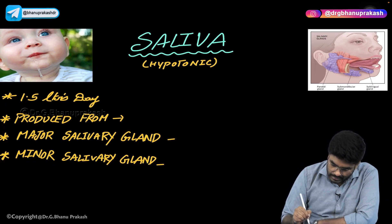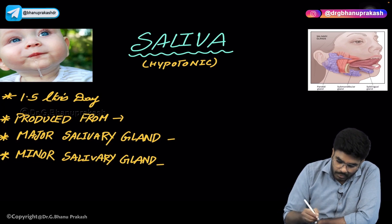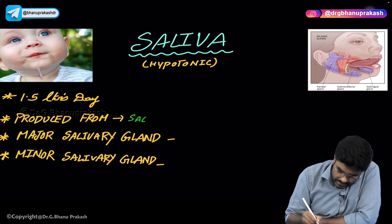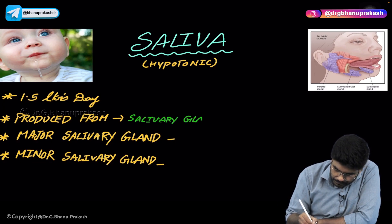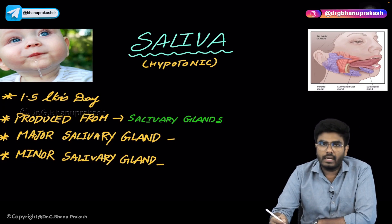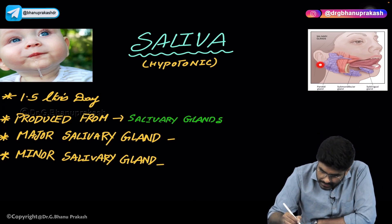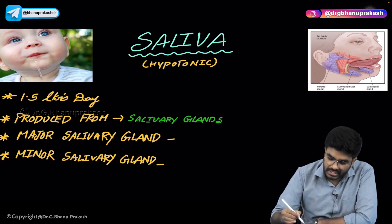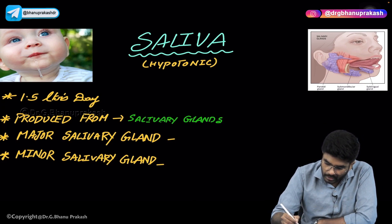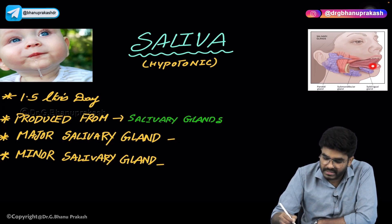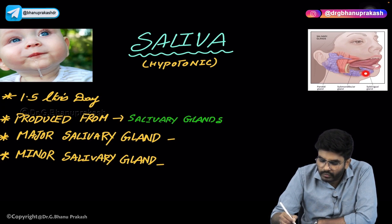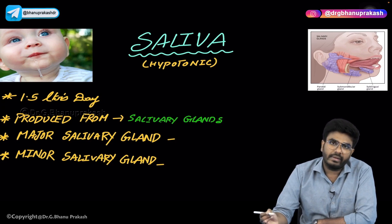Saliva is produced from salivary glands. There are three important salivary glands. First, the parotid gland, which is present in the cheeks, along with its duct. Second, the sublingual salivary gland, which is present below your tongue. Third, the submandibular salivary gland, which is present below your mandible.